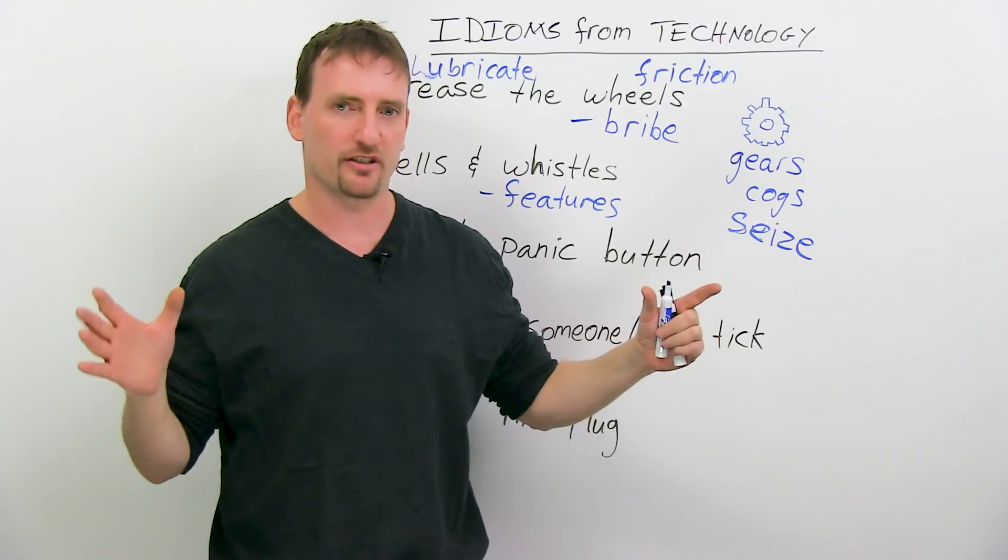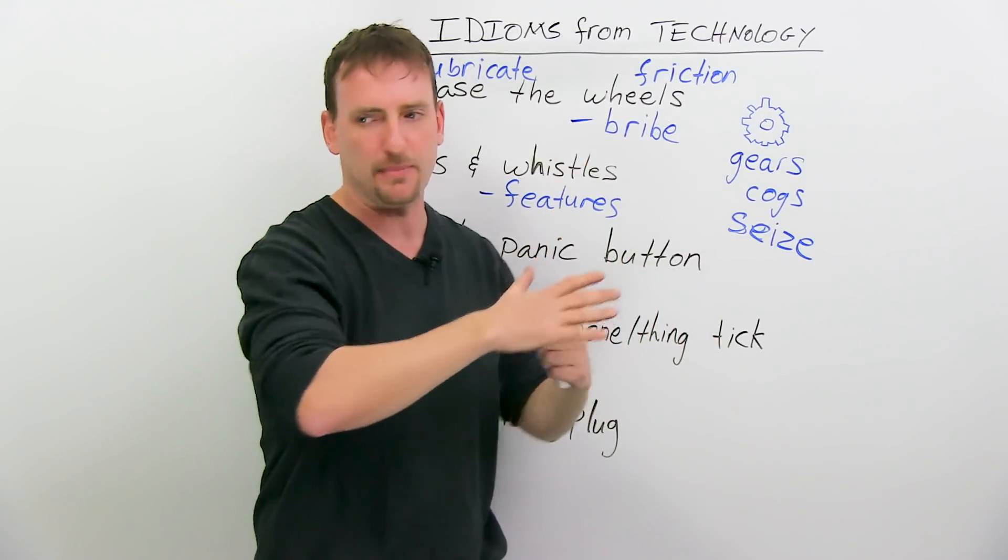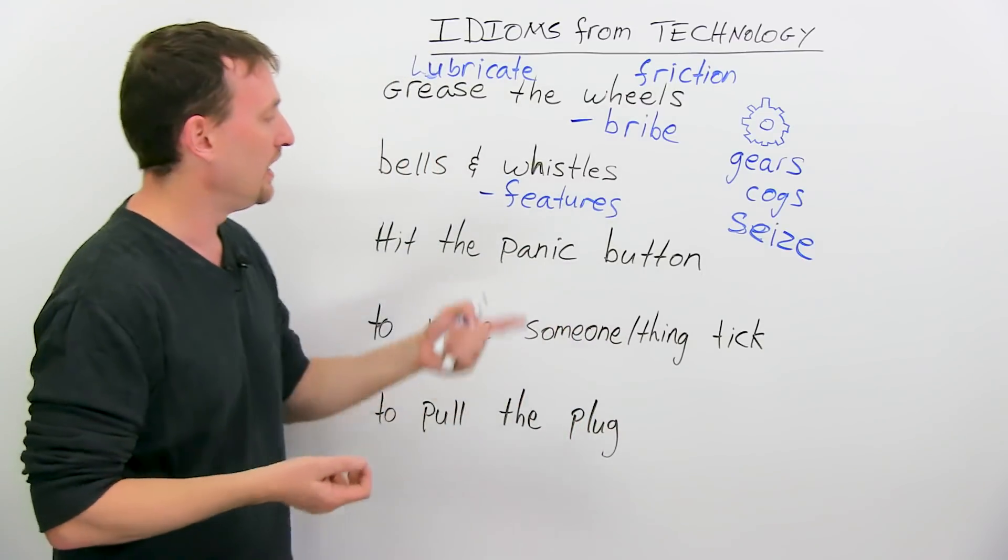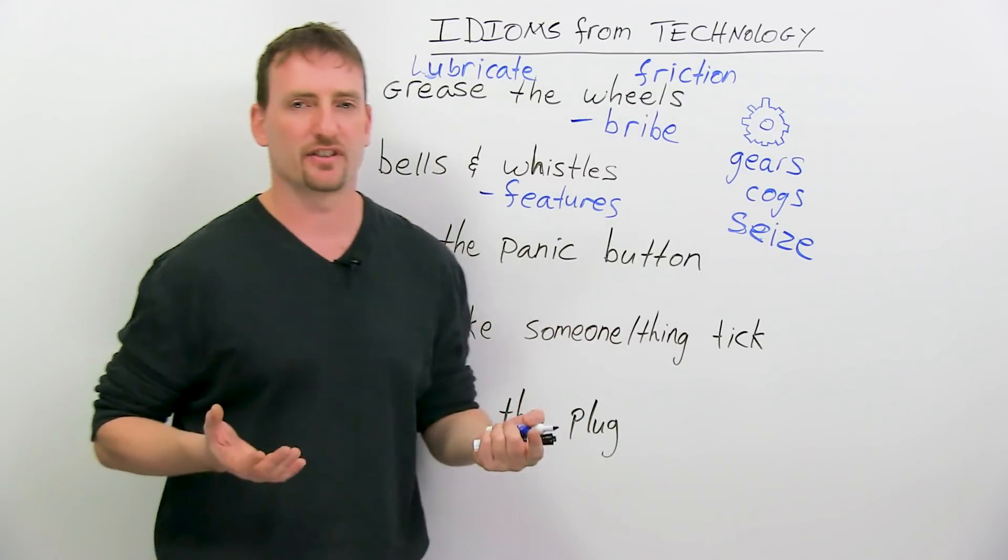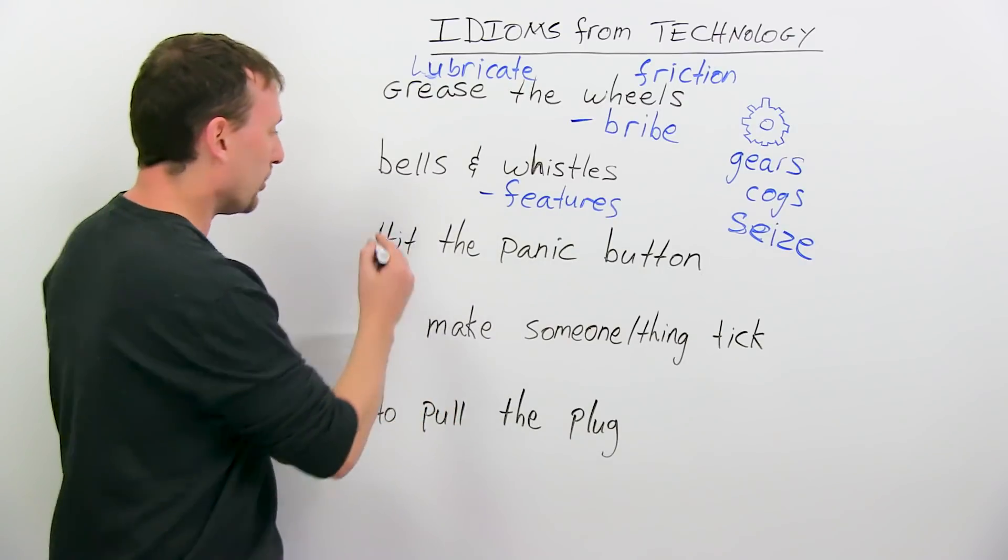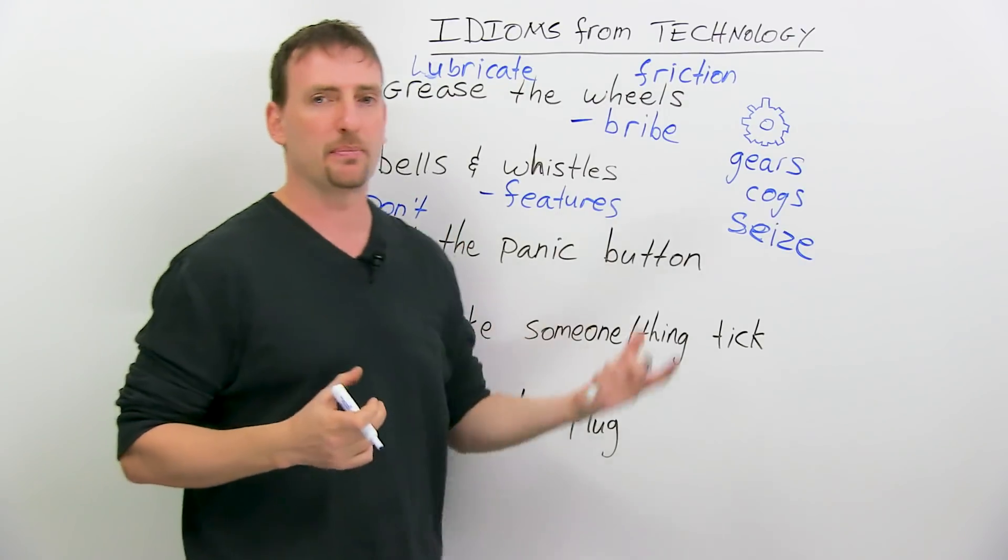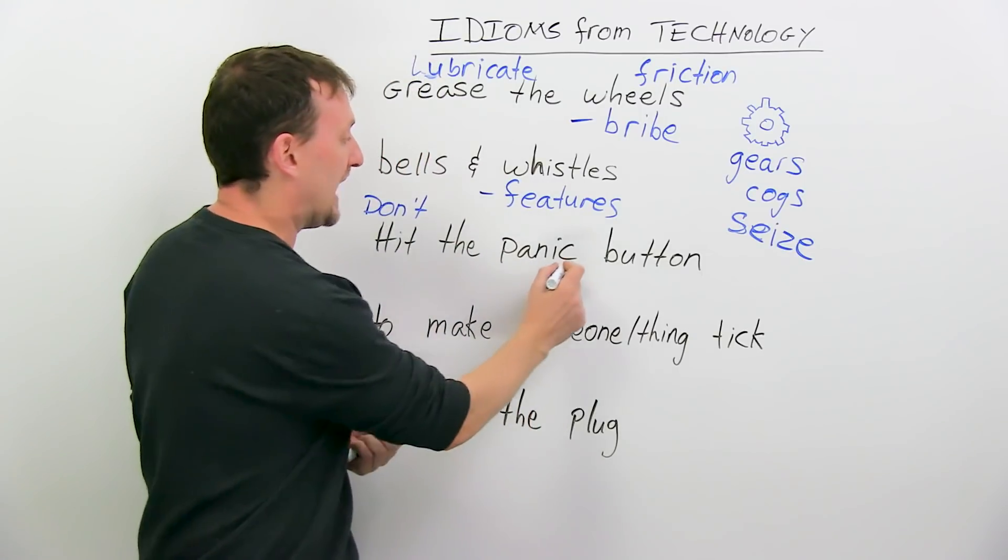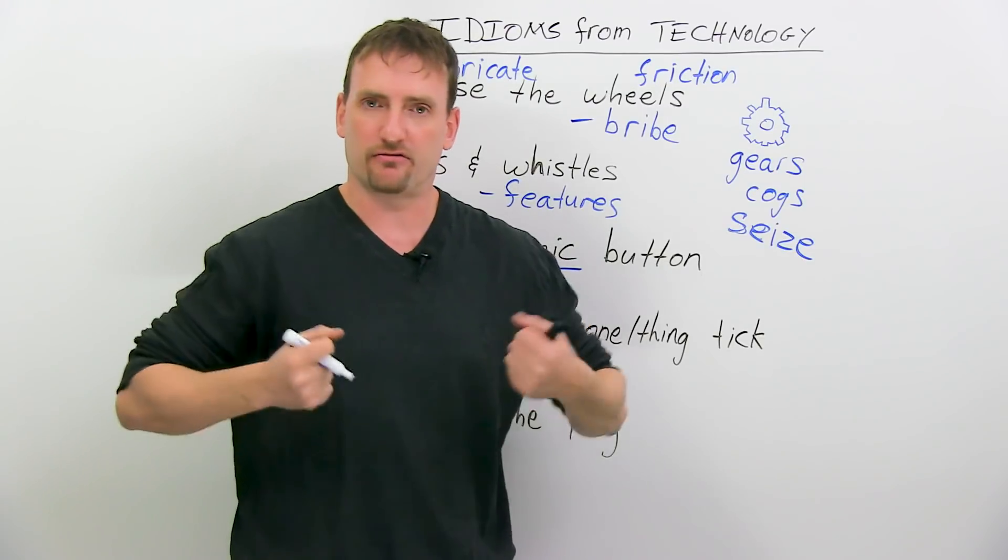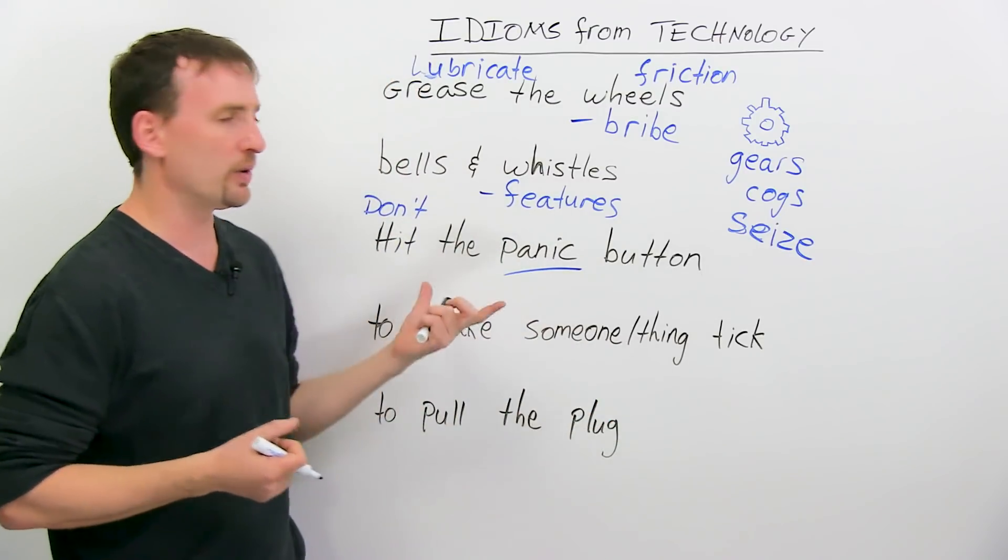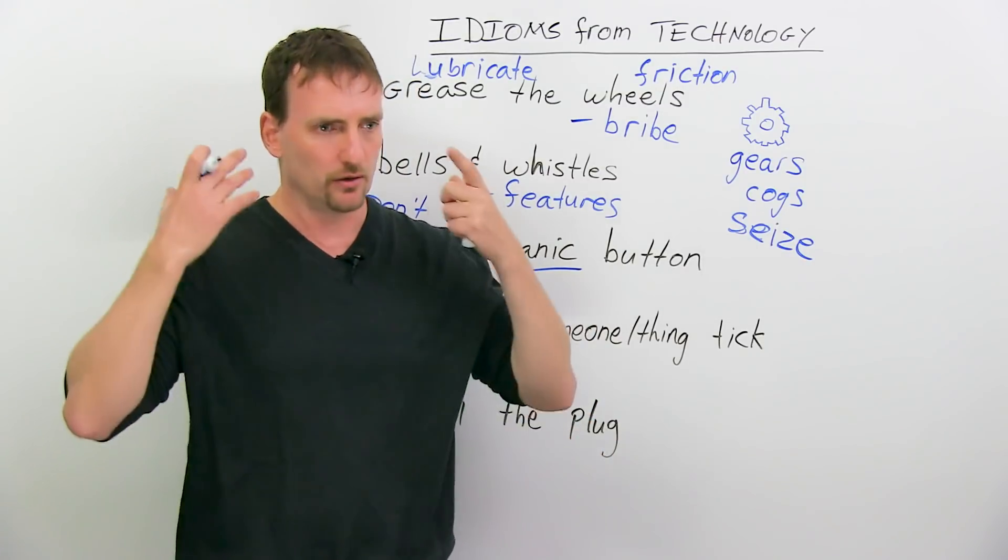When there's a dangerous situation or emergency, you just hit the panic button, everything shuts down, you go save your friend from the machine. We use this in everyday conversation. Basically, we say, don't hit the panic button just yet, maybe. Or he hit the panic button. It basically means to panic, to be really nervous, really scared, really worried about something.